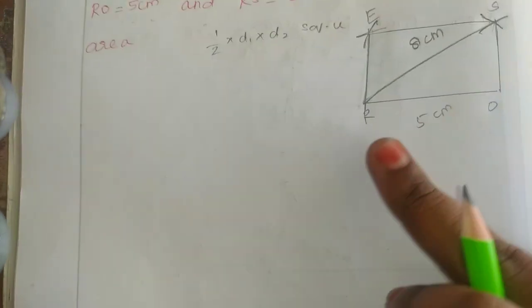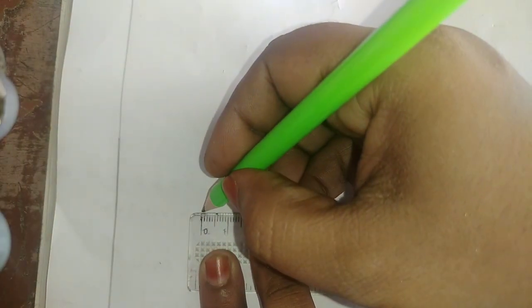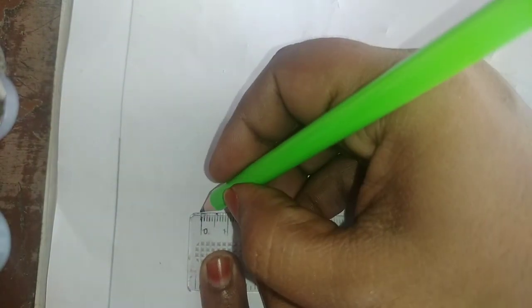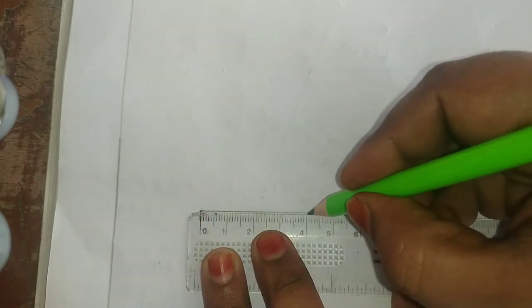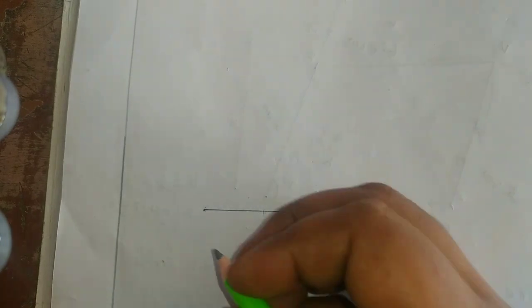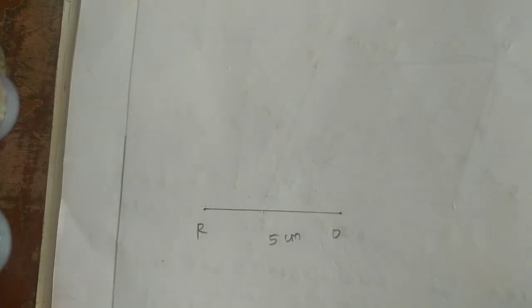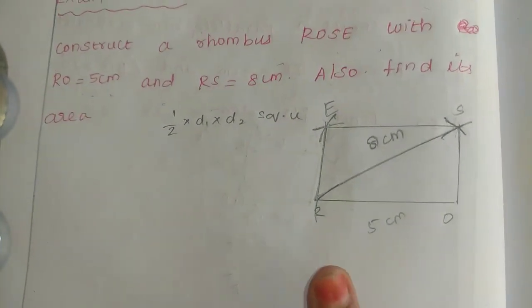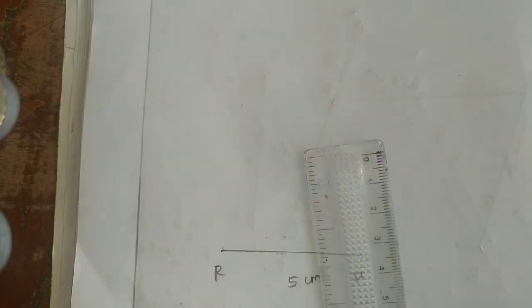RO is 5cm. We can make a line. There are four sides here. RO is 5cm. First, we will draw a line. RO is 5cm. Next, we have RS. How is RS? RS is 8. So what does it do? Compass.